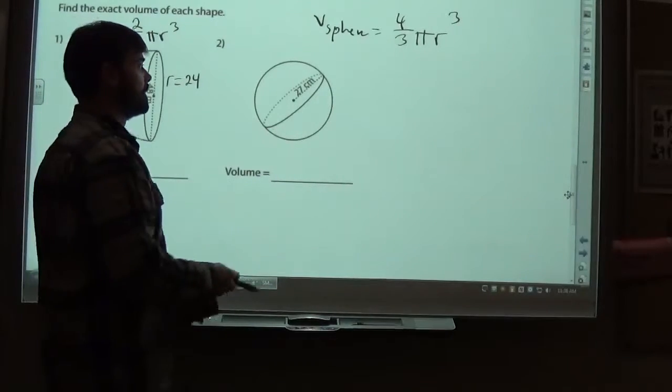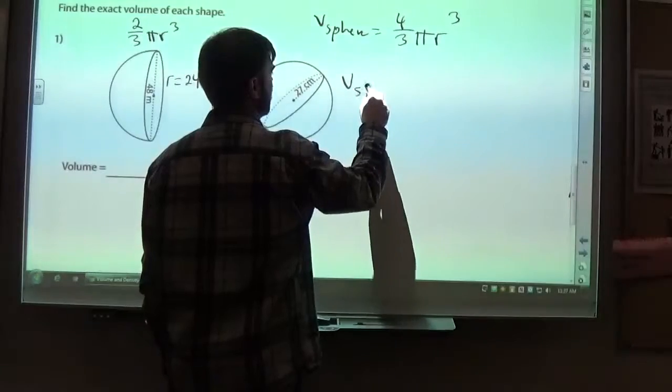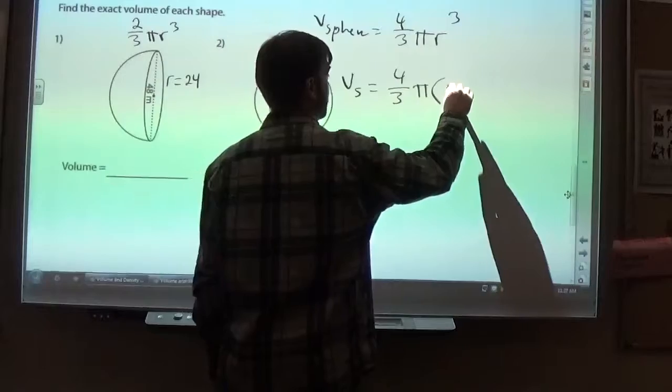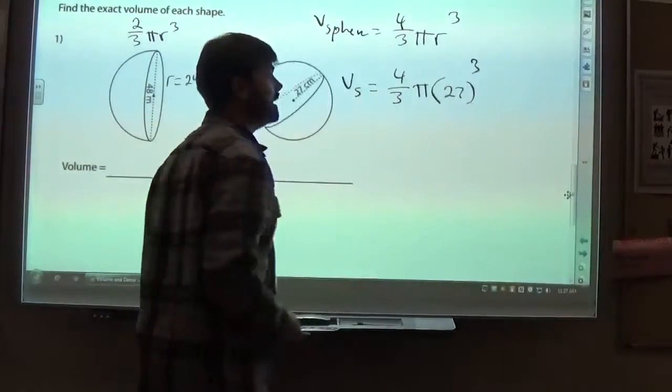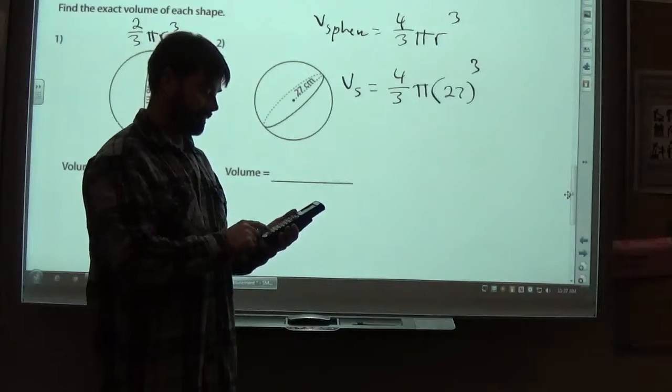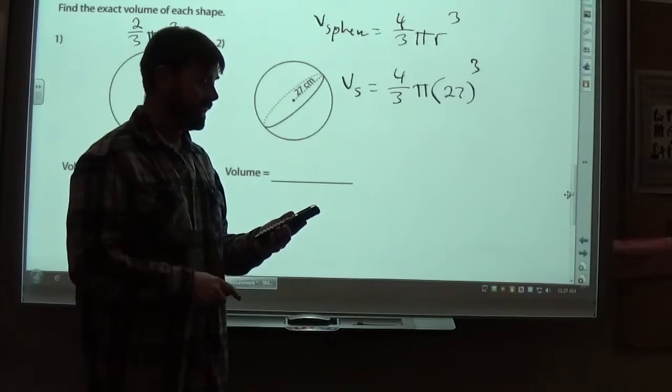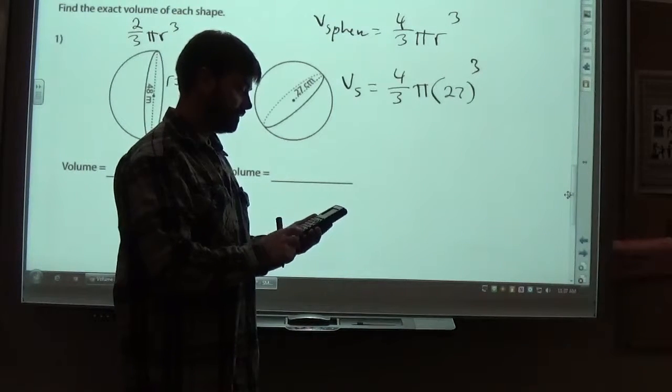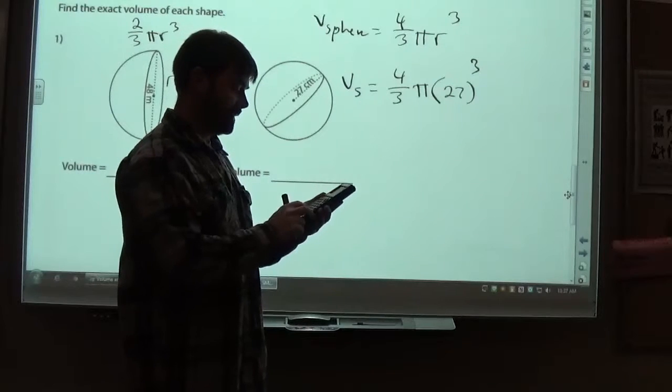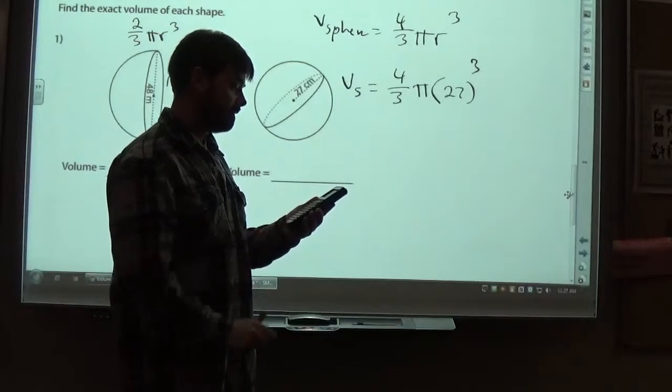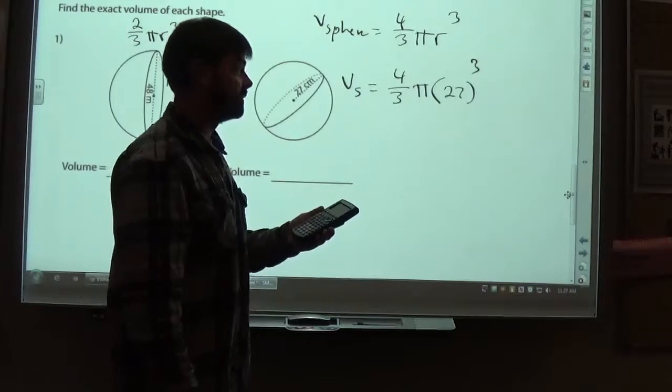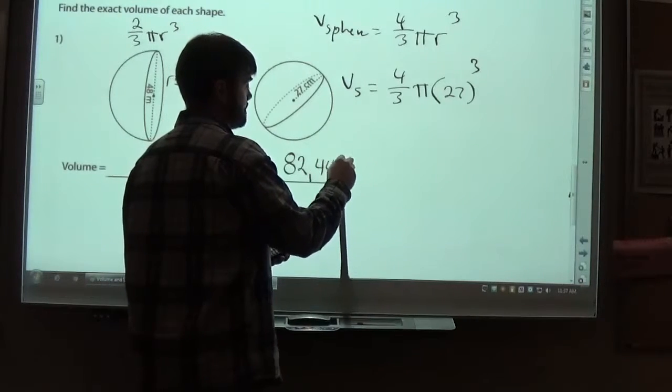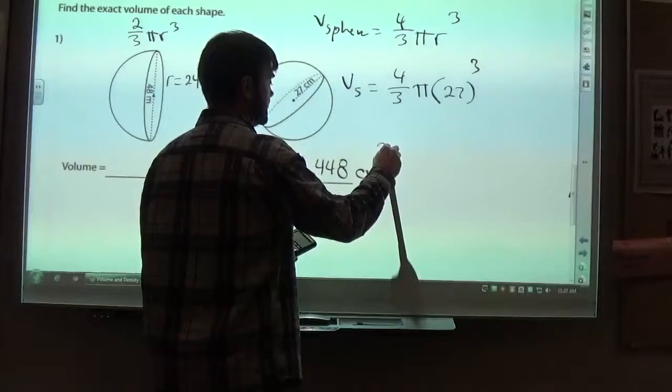So I'll solve for the volume of this sphere, where the radius is 27. So the volume of this, they're showing 4 thirds pi times r, which is 27, to the third power. And that is to the third power. It's not squared. So I'm going to take the 27 and go to the third power. And that will give you a big number. It's certainly a large value. Times pi, and then multiply that by 4 thirds. This gives me 82,448. And the units here are cubic centimeters.